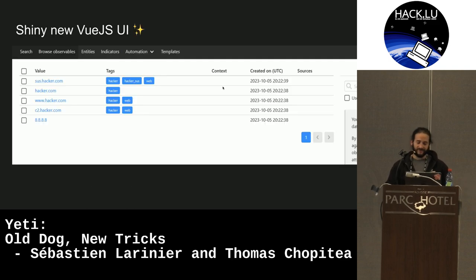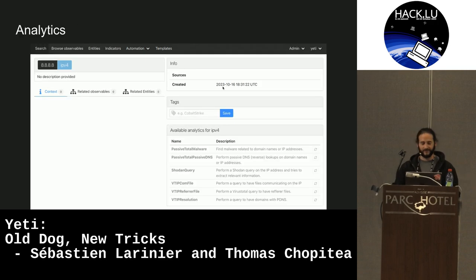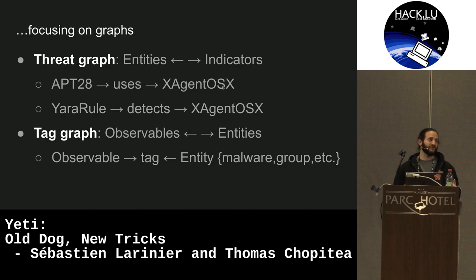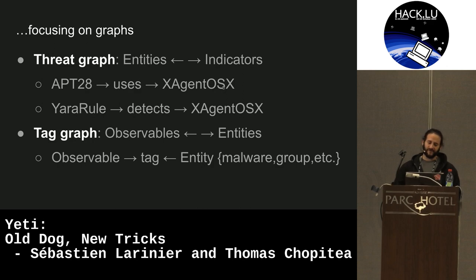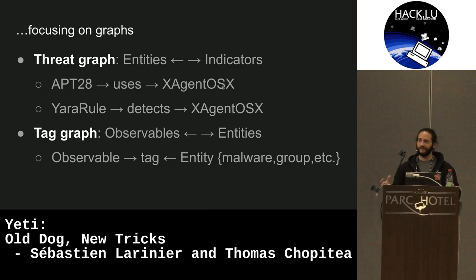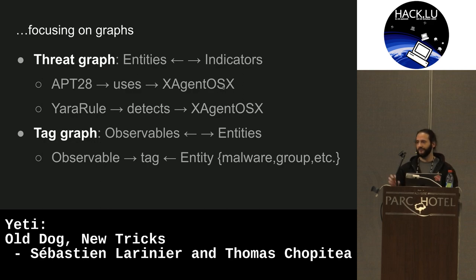There's a shiny new UI in Vue.js — shinier than before but keeping the same concepts and analytics. We're focusing heavily on graphs. There are two main graphs in Yeti. One is a threat graph that maps entities to indicators and entities to each other — for example, APT28 uses Xagent OSX, and a URL detects Xagent OSX. You can also associate observables with entities — malwares, groups, whatever — through tags, and track how those associations evolve over time.